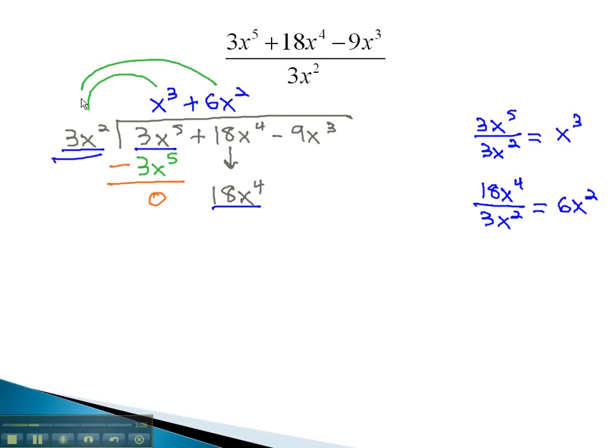Again, we will multiply this by the divisor to get 18x to the 4th. We change the sign and combine to get 0, so we can bring down the next term, negative 9x cubed.